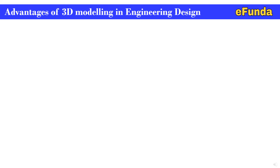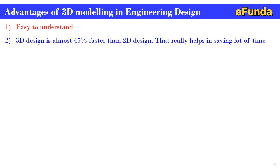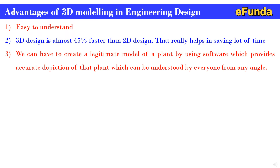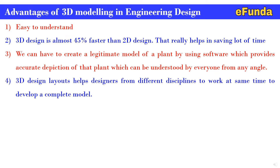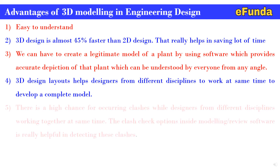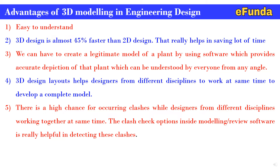Advantages of 3D modeling in engineering design: First, easy to understand. Second, 3D design is almost 45% faster than 2D design, which really helps in saving a lot of time. Third, we can create a legitimate model of a plant using software that provides an accurate depiction of the plant which can be understood by everyone from any angle. Fourth, 3D design layouts help designers from different disciplines to work simultaneously to develop a complete model. Fifth, there is a high chance of clashes occurring while designers from different disciplines work together, and the clash check option inside modeling review software is really helpful in identifying these clashes.